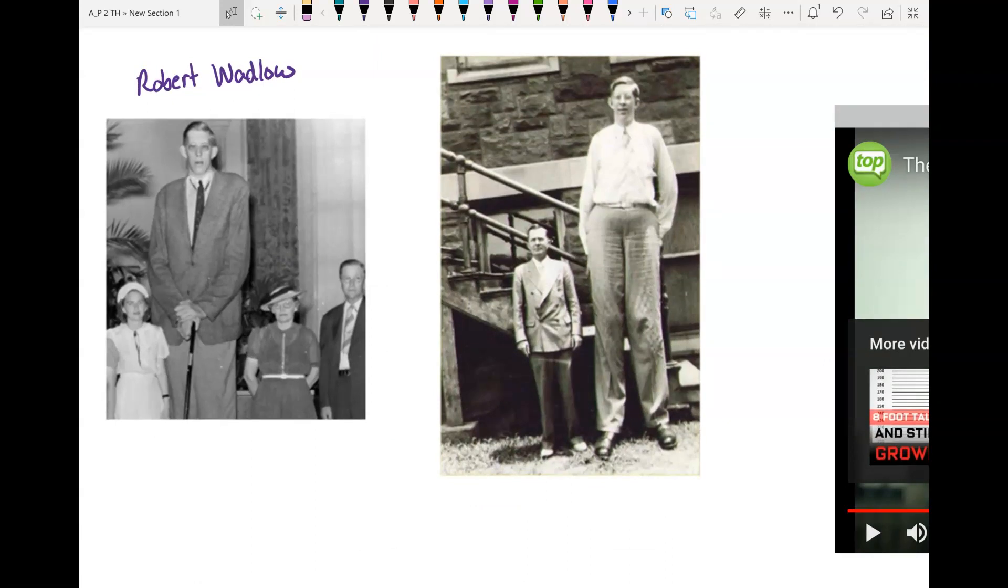So Robert died in 1940 from a septic blister. That was before we had antibiotics. Antibiotics came out in the mid-1940s. Because he was so tall, he had to wear metal braces to help support his legs, and the metal brace made a sore on his leg or on his ankle. And that sore got infected and he died of the infection. Today, if you get a sore from a brace or from your shoe, you just put some antibiotic ointment on it and you're fine. But no antibiotics yet in 1940.